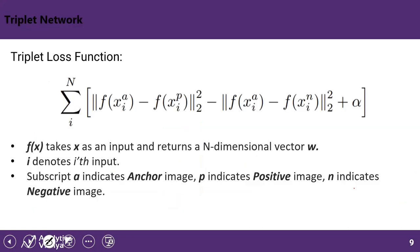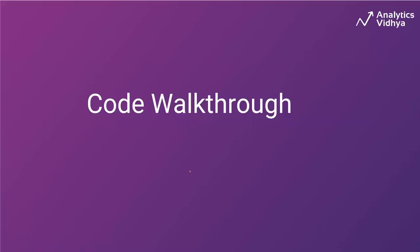Looking at the triplet loss function: f(x) is our model, x is the input anchor, and we compute the squared Euclidean distance (L2 norm) between anchor-to-positive and anchor-to-negative. Alpha is the margin — a hyperparameter that determines the minimum required distance between the anchor-to-positive and anchor-to-negative pairs for the network to update its weights. It ensures that the distances do not collapse to zero; alpha enforces a minimum separation.